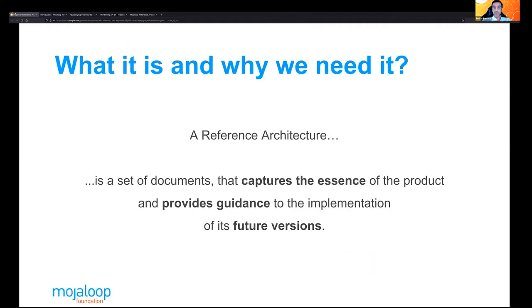In the simplest form, a reference architecture is a set of documents that capture what the product does, what the product is, and — by incorporating the principles, in our case MojoLoop's principles and design principles — guide the implementation: the code, the design, the architecture of its future versions. Ideally, a reference architecture is what good looks like: the target state we would like to achieve in terms of technology, architecture design, and how we assemble our solution together. Miguel will now walk us through the details, the principles that guide it, and the benefits.